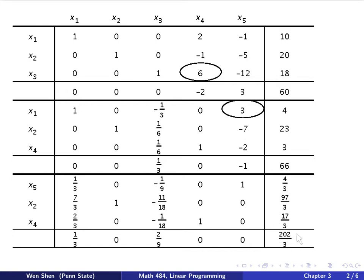The minimum value is the negative of this item here. The value is attained at the basic solution: this is x5 value, x2 value, x4 value, and then x1 and x3 are zero. From now on, we will be using this simplex tableau form in our computation, because this is a much more compact way of recording all your results.